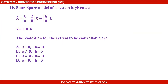The 10th Question is on the State Space Model. The state space model of a system is given as: x-dot equals the matrix [0, 2; A, 0] into x, plus the matrix [B; 0] into u, and y equals the matrix [1, 0] into x.